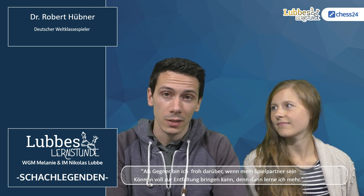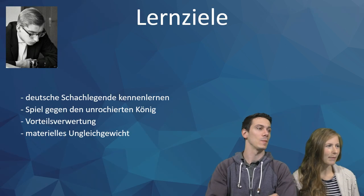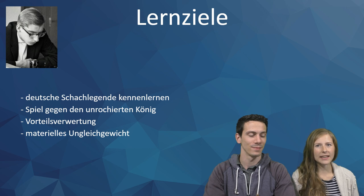Hallo und willkommen zu Lernstunde 152. Bevor wir weiter mit der Liste der klassischen Weltmeister voranschreiten, wollen wir uns eine deutsche Schachlegende nochmal anschauen, beziehungsweise ein paar Partien von ihm, nämlich Dr. Robert Hübner. Er war lange Zeit Weltklasse-Spieler, der beste deutsche Spieler seit Lasker, der erfolgreichste. Das ist Grund genug, mal zu schauen, was er so getrieben hat. Was wir heute machen, sehen wir wie immer in den Lernzielen.